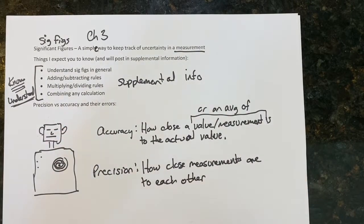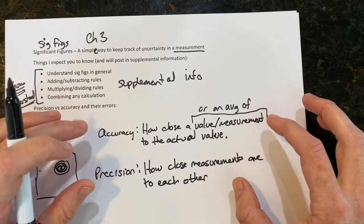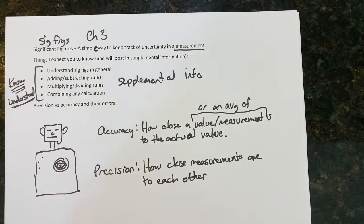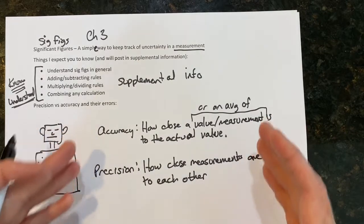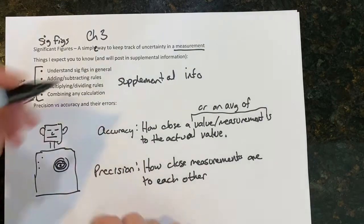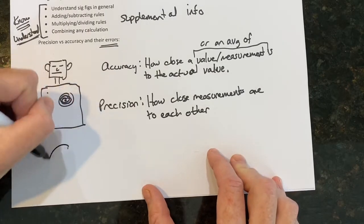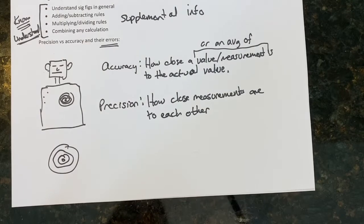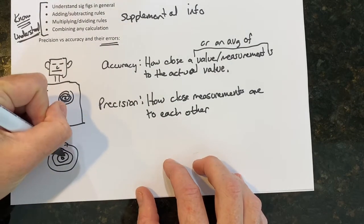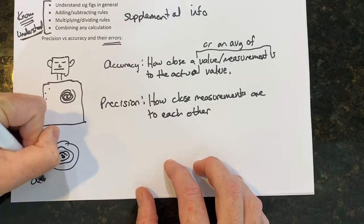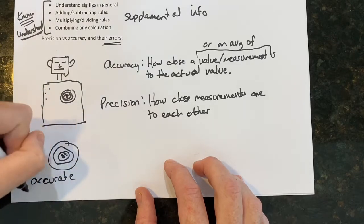Understanding these two concepts is pretty important in analytical chemistry. You can change your entire experiment based on how accurate or precise something comes out to be, and use that information to deduce what initial causes of error were. For example, if you shoot here, here, and here - all really close to the target - you're really close to the target, which would be accurate, and those are close to each other, so it would also be precise.